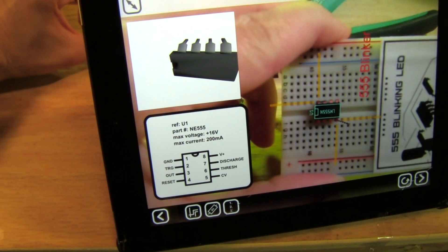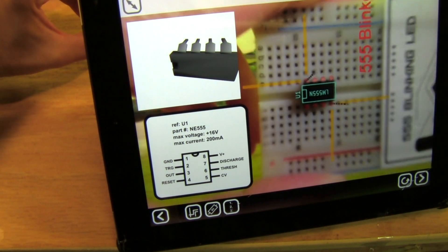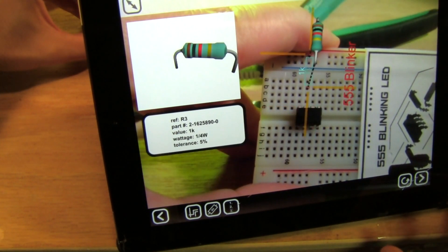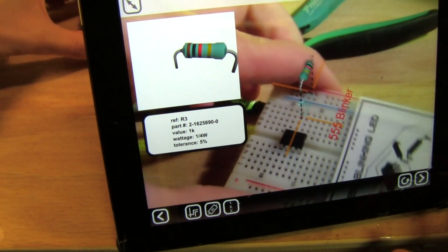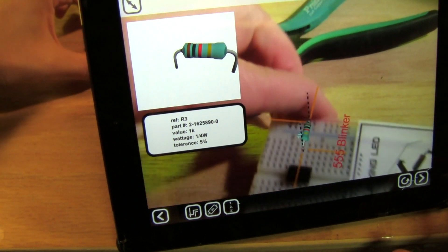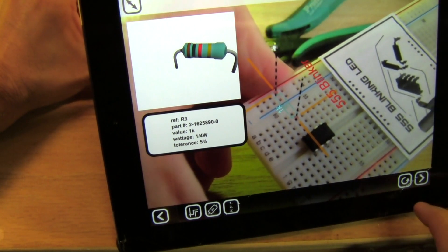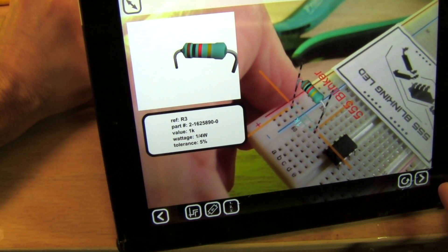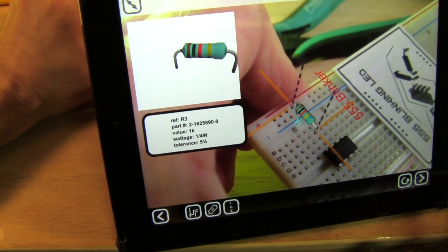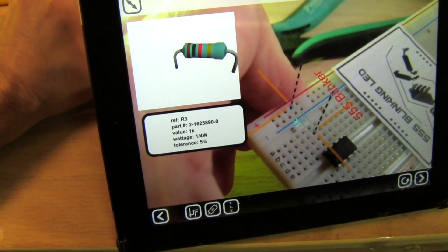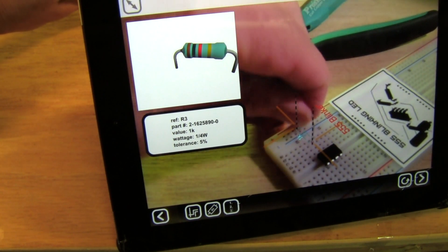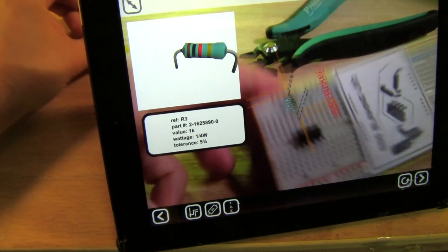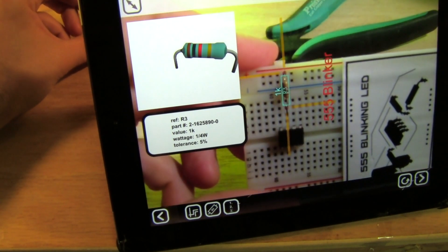Then I can make sure it's right by looking straight down on it. Okay, next let's do this resistor. So over here I see it's a 1K. Put that guy in there and then check it.